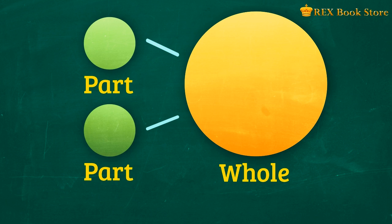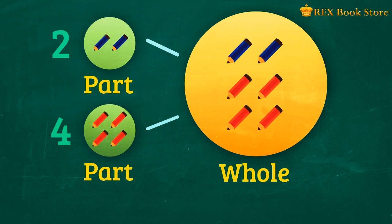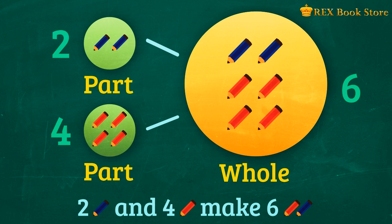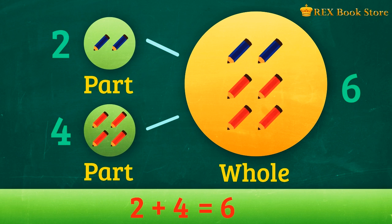If we have two blue pencils and four red pencils, how many pencils do we have all in all? Using number bonds, we place two here and four in the other to show that we have six pencils. Two blue pencils and four red pencils make six pencils. Two plus four makes six. How many pencils are there altogether? There are six pencils.